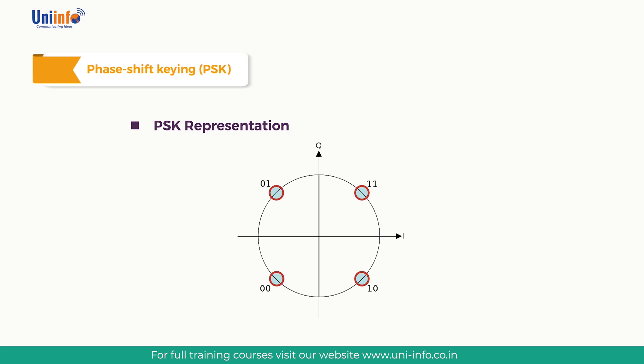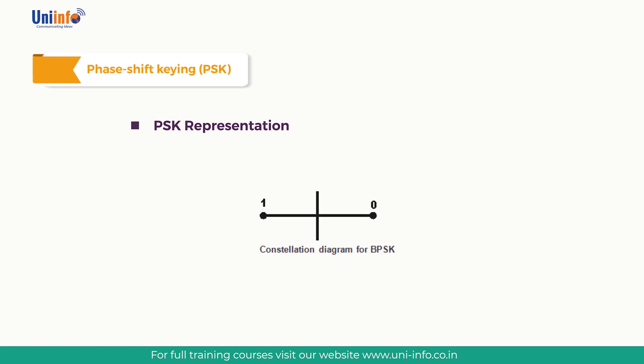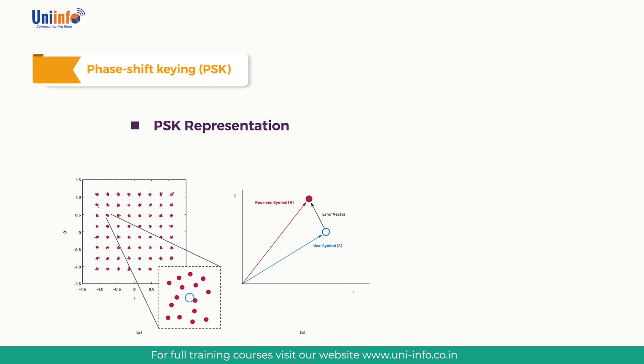Most phase shift keyed systems use a constant amplitude, so points appear on one circle and changes in state are represented by movement around the circle. For binary phase shift keying using phase reversal, the two points appear at opposite points on the circle. Using a constellation view of the signal enables quick fault-finding; if the problem is related to magnitude, the constellation will spread off the circle either towards or away from the origin.